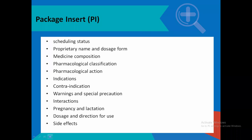There is a certain structure the package insert must follow to be approved by SAPRA. Before it can be approved, it must go through verification and be deemed correct. It must have the scheduling status — for example, Schedule 0, Schedule 1, or Schedule 4. It must have the proprietary name and dosage form. The medicine composition must list everything: the active ingredient and all excipients, because you might be allergic to one of them.